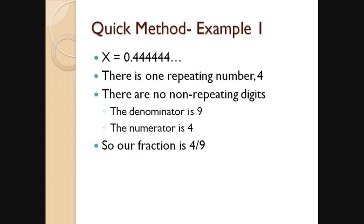So again, here we have 0.444. We have one repeating number, the 4, so we write a 9 in the denominator. In this case, there are no non-repeating digits between the decimal point and the 4, so we do not write a 0 in the denominator. Our denominator is just 9. The numerator is just the first repeating number, which is 4. So we have 4 over 9, 4 ninths.